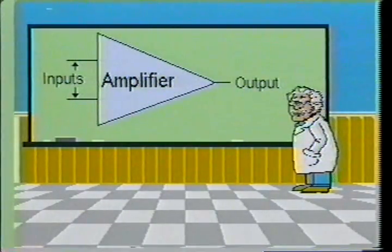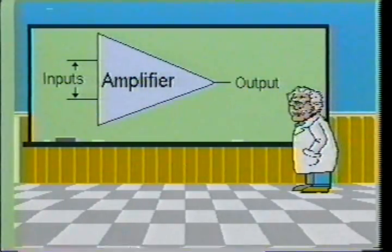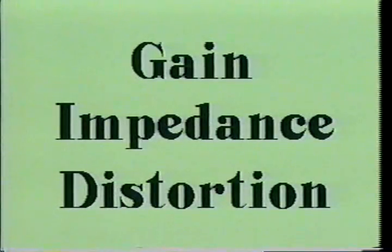Amplifiers are used to reproduce small input signals. Amplifiers may be powered by batteries or electronic power supplies. The characteristics of all amplifiers may be described in terms of a few basic parameters.